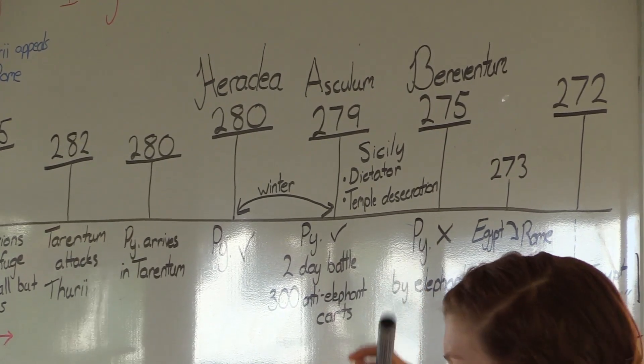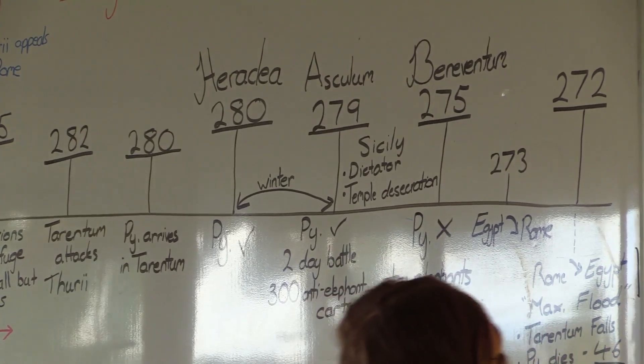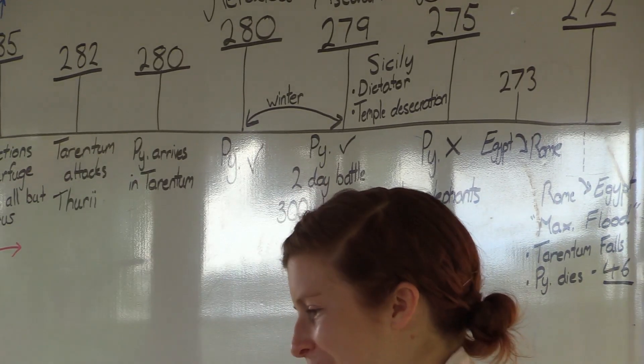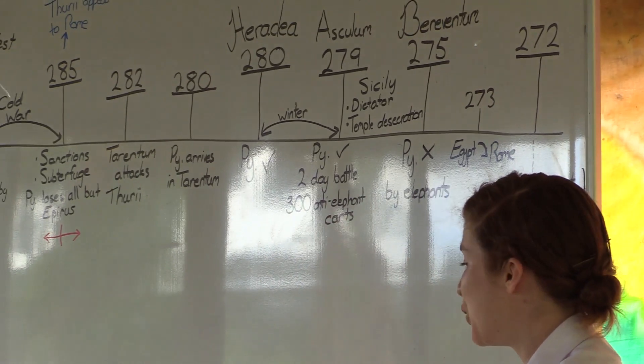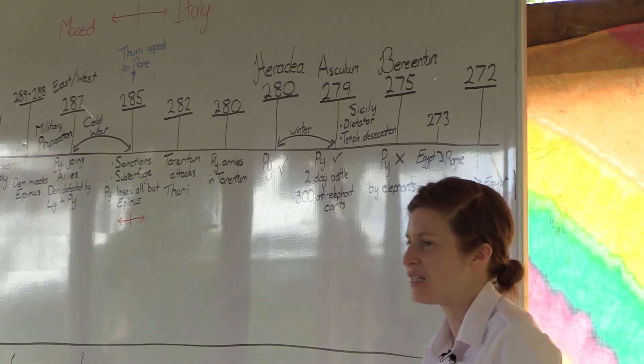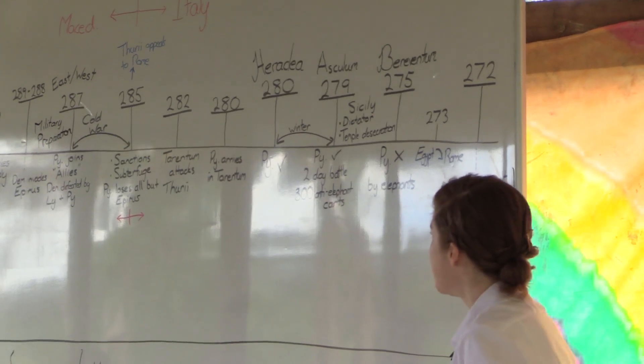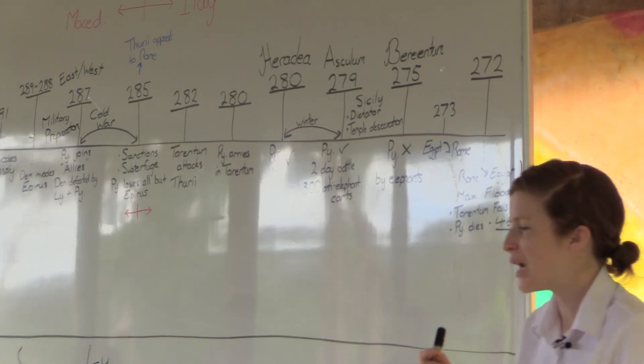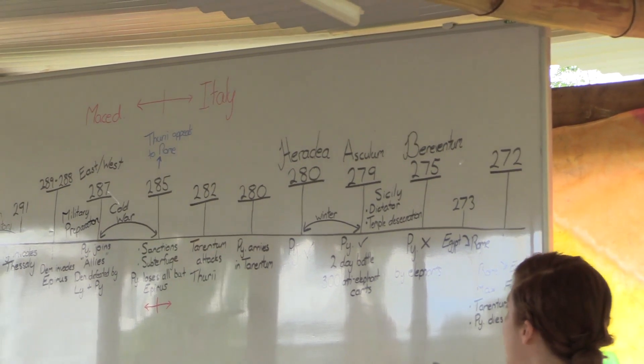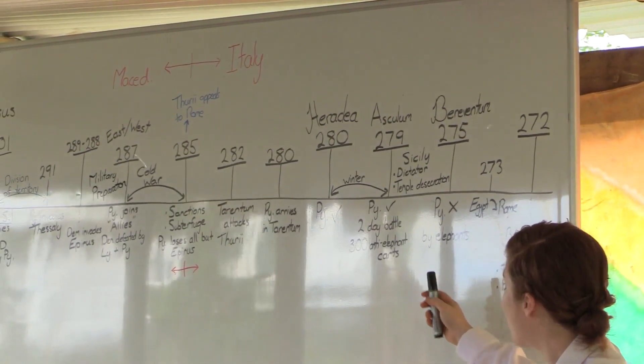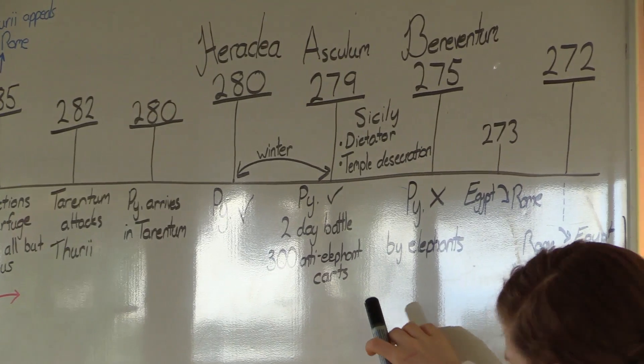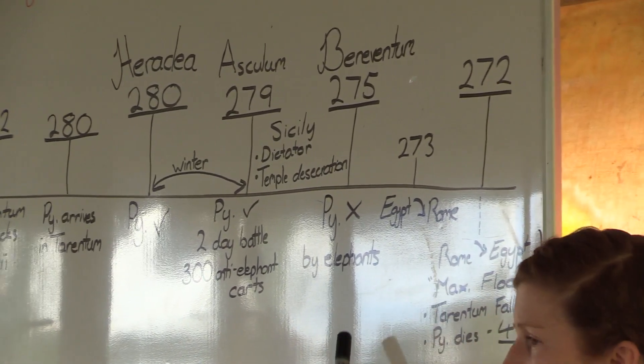Pyrrhus then travels to Sicily. He's lost too many men and he needs to rebuild. He has this grand plan of taking Sicily and then Carthage coming back around and taking all. And to build up that huge military program, he becomes somewhat of a dictator, more of a dictator than he had shown himself to be before. To fund it, he desecrates a temple but he loses that wealth when the ships carrying those treasures are wrecked. Forced out of Sicily, when Rome is again marching south, he returns back to Italy and he fights Rome one last time at the Battle of Beneventum.